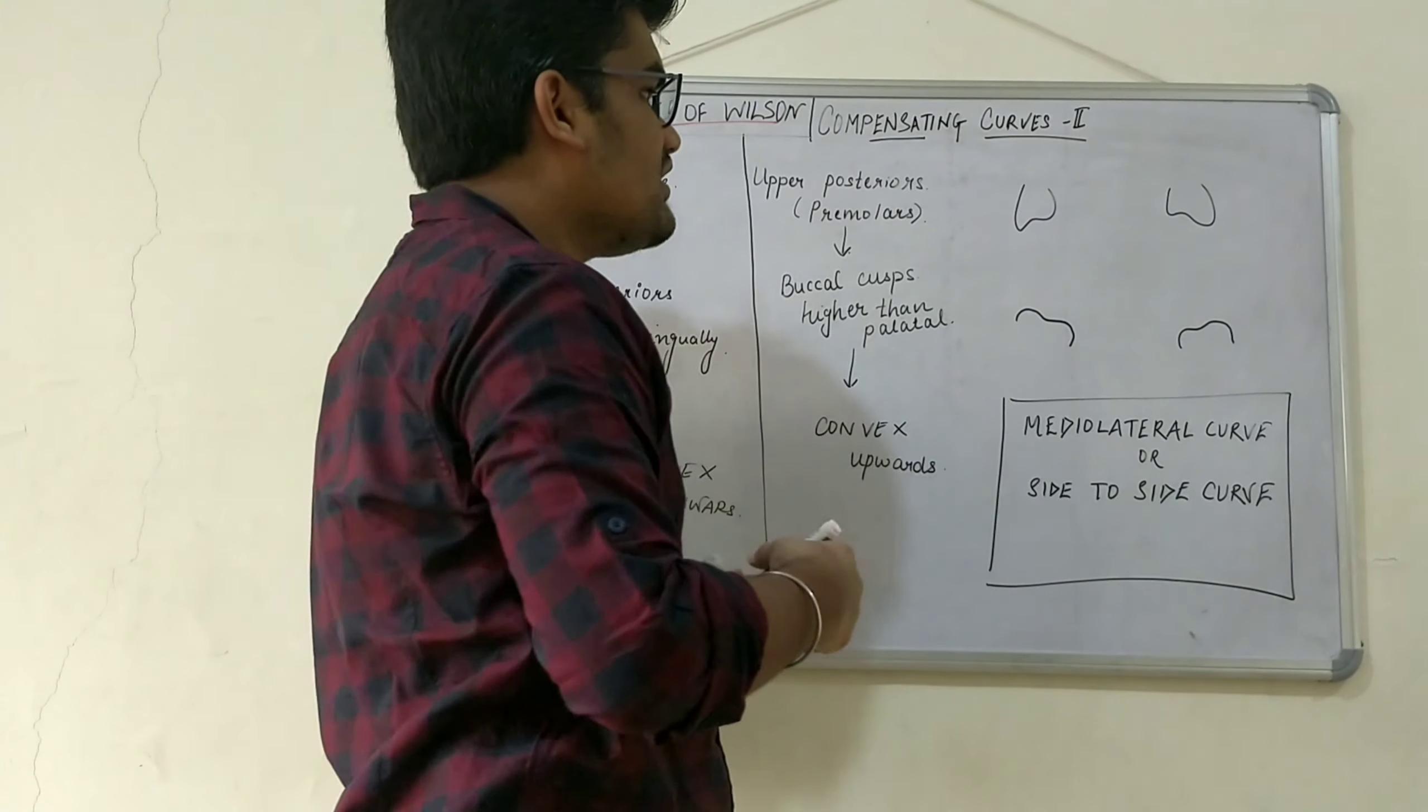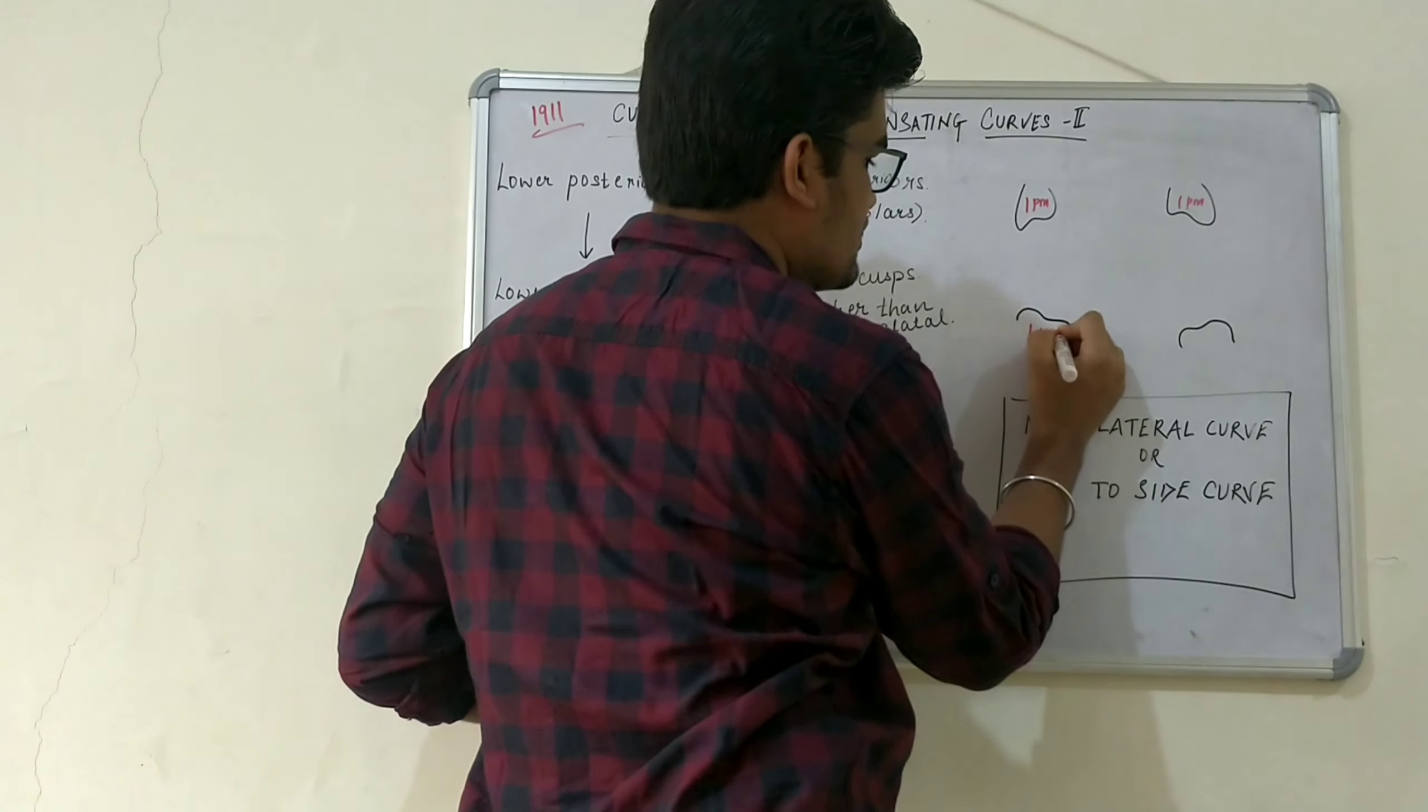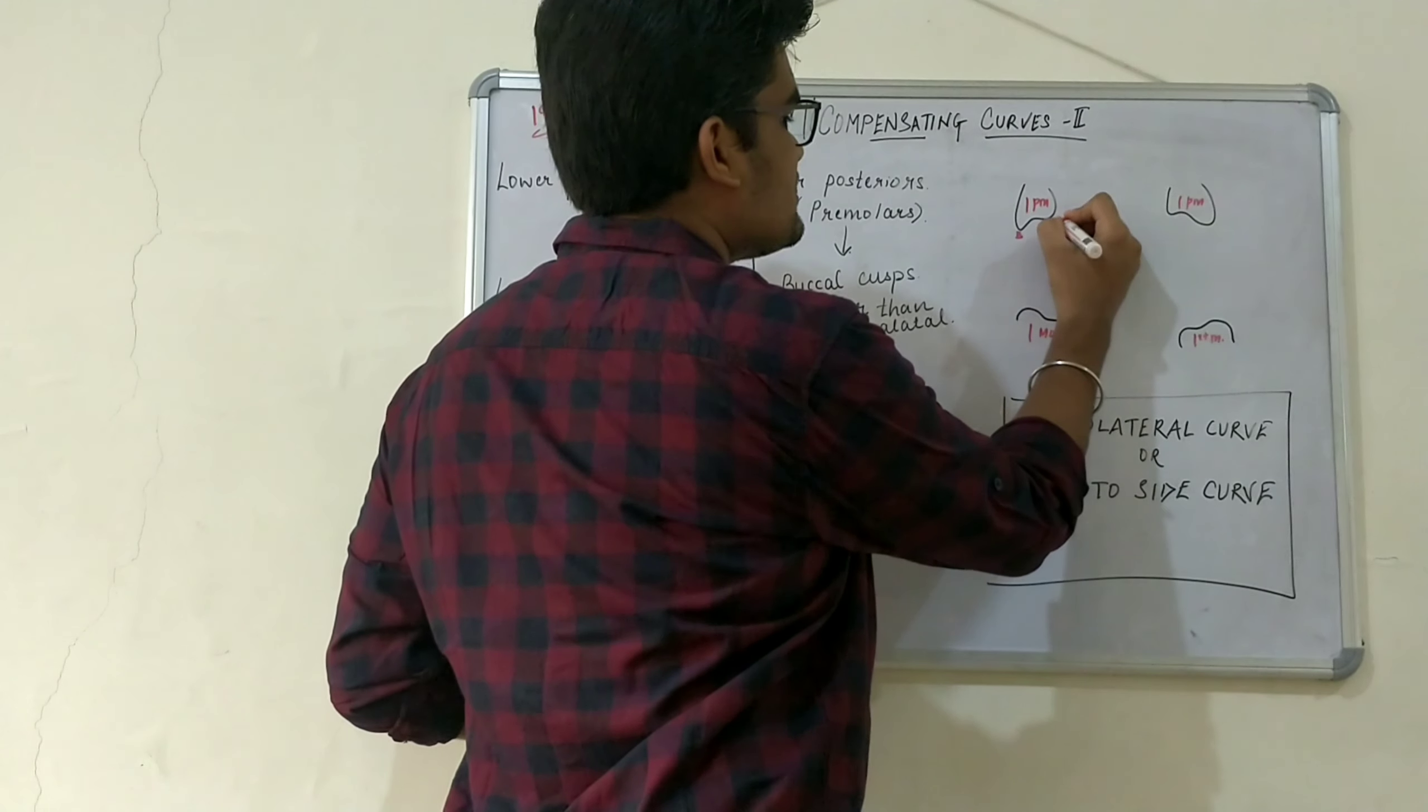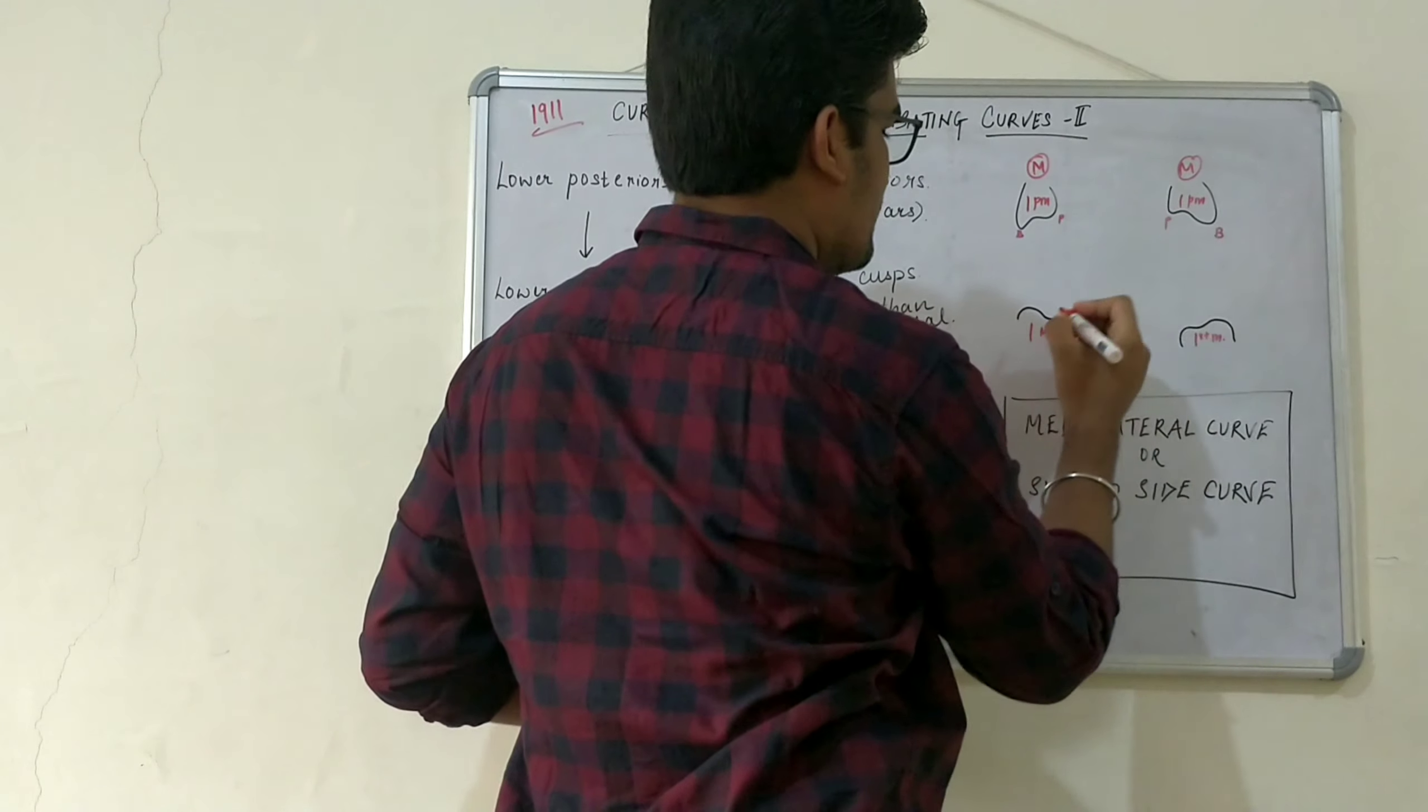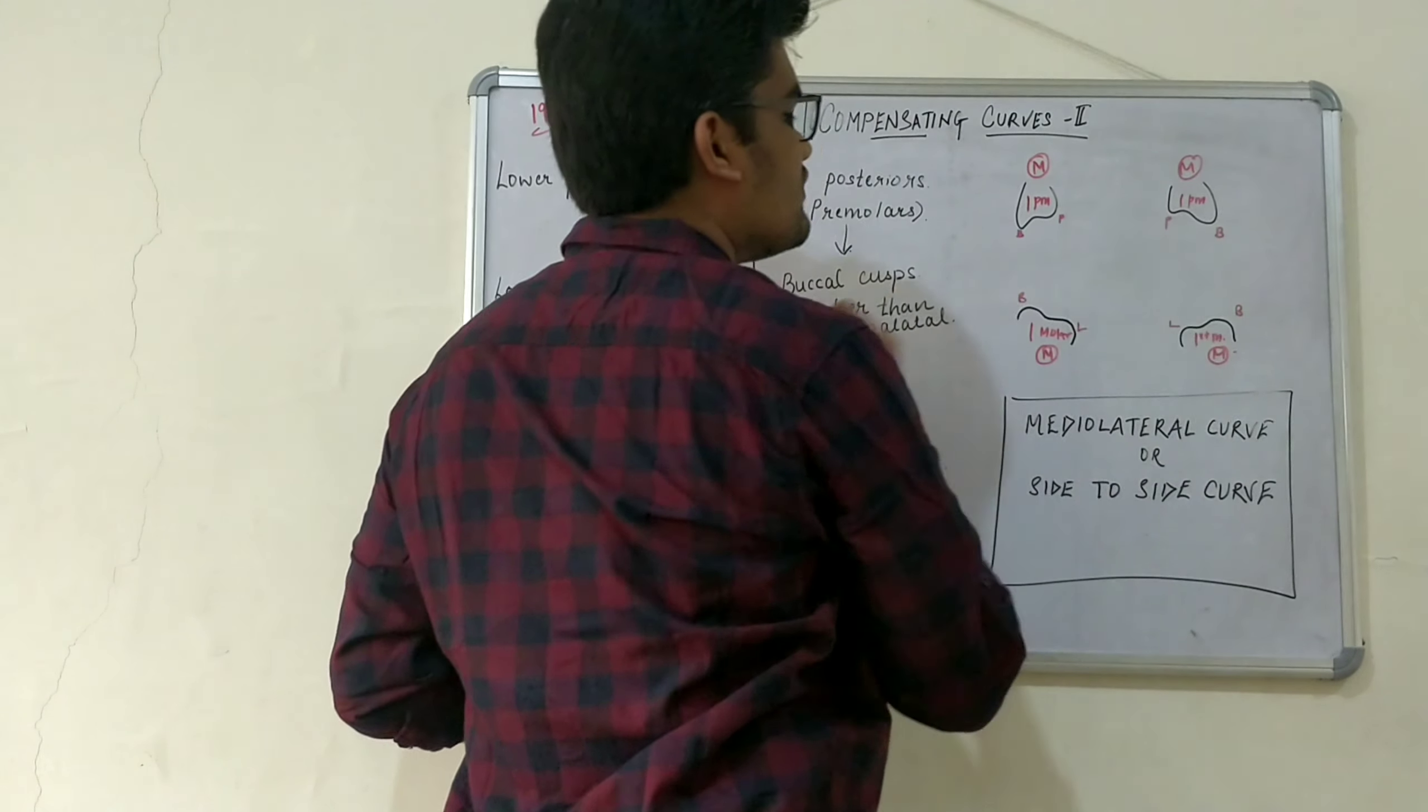In the figure, these are the first premolars maxillary, and these are the mandibular molars—the first molars. This is the buccal cusp and this is the palatal cusp, and this is the mesial surface of the tooth. This is the buccal cusp, lingual cusp, buccal cusp, and lingual cusp.